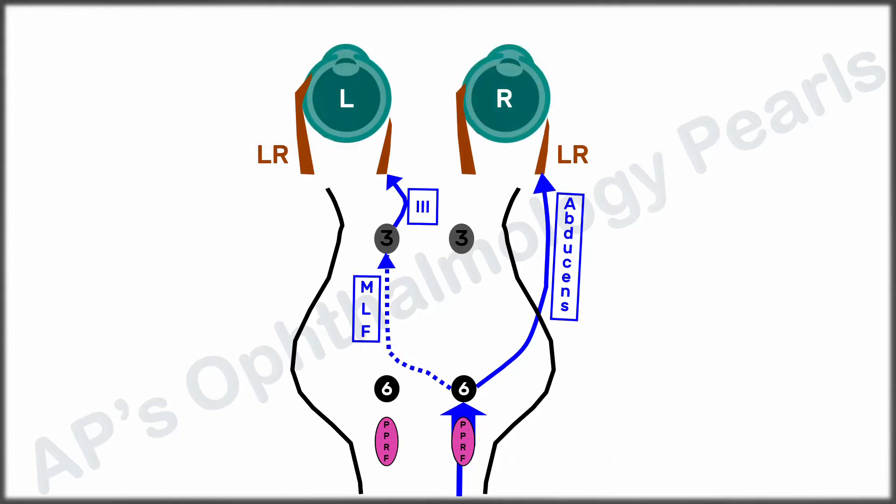If the lesion is however large enough to involve the abducens nucleus and/or the PPRF in addition to the medial longitudinal fasciculus, then additional findings are present. Because of the PPRF or abducens involvement, there is an ipsilateral horizontal gaze palsy, and because of the MLF involvement, there is a left INO.